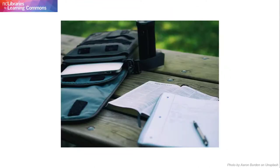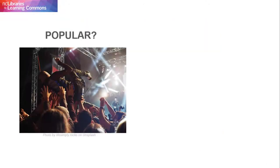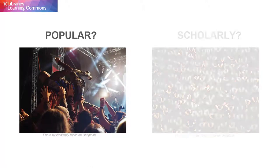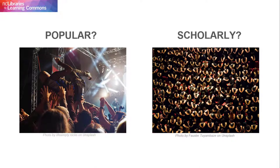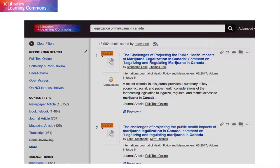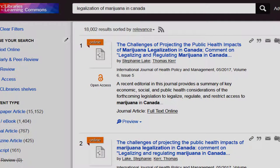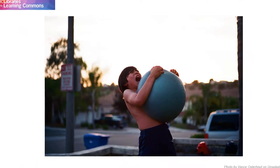Your instructor has given you an assignment, and she wants you to find one article that is from a Popular Periodical and one article that is from a Scholarly Periodical. You've found some articles in your library's online catalog, but you can't tell which articles are Scholarly and which articles are Popular. You're starting to get frustrated.